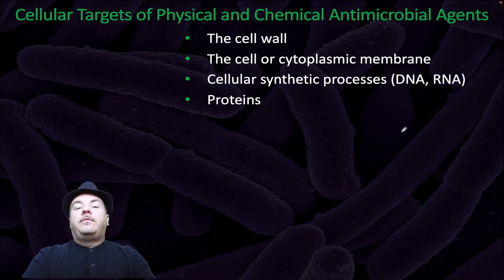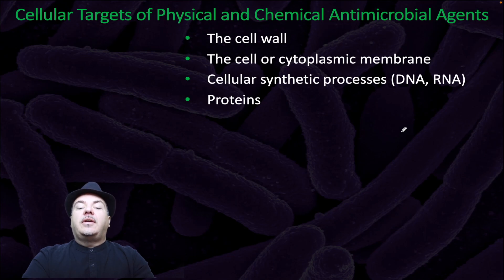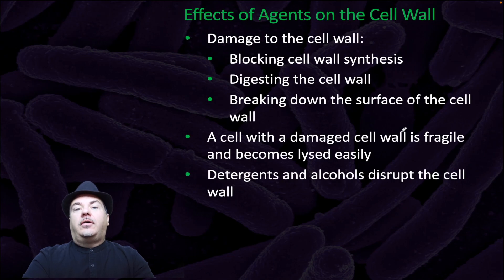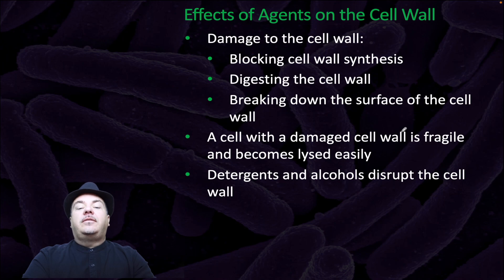Cellular targets of physical and chemical antimicrobial agents include the cell wall, the cell or cytoplasmic membrane, cellular synthetic processes such as DNA and RNA, and proteins. Effects of agents on the cell wall include damage through blocking cell wall synthesis, digesting the cell wall, or breaking it at the surface. A cell with a damaged cell wall is fragile and becomes lysed easily. Detergents and alcohols disrupt the cell wall.